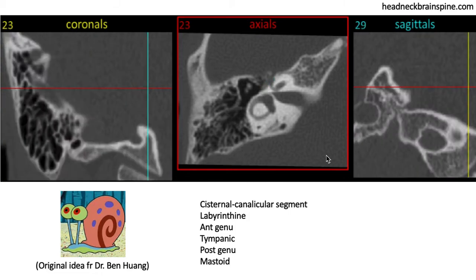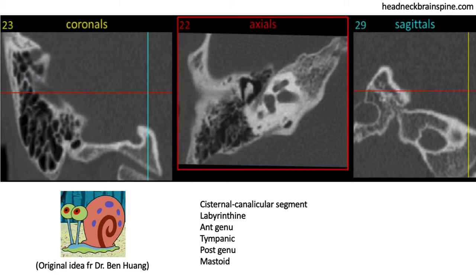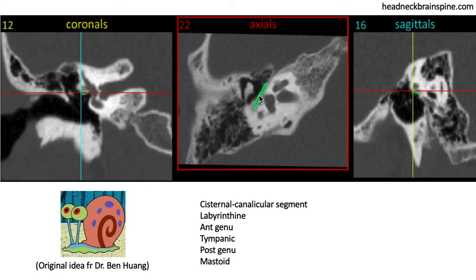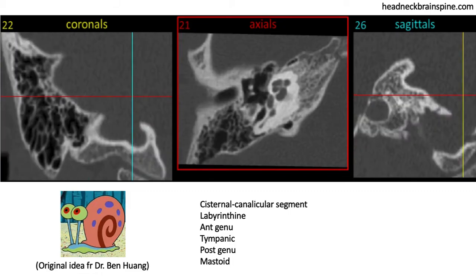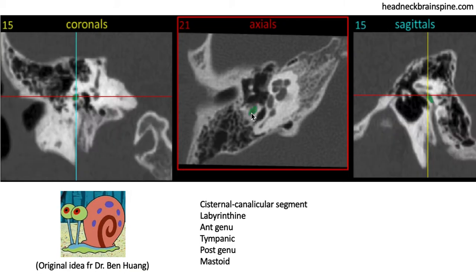It then enters the tympanic cavity — here at the medial aspect of the tympanic cavity. Going more inferiorly, we see the posterior genu, or the posterior bend. Check it here in the sagittal image.